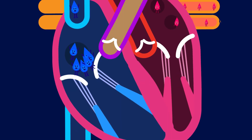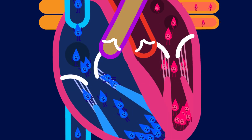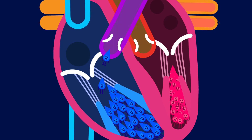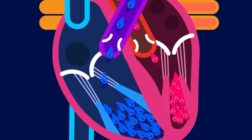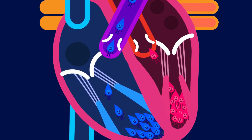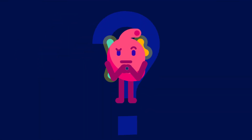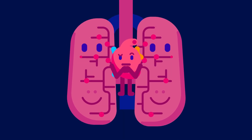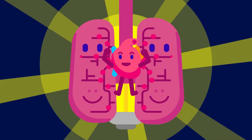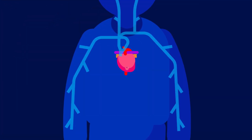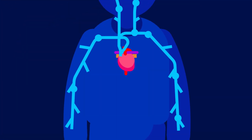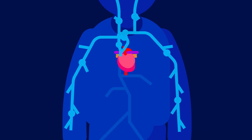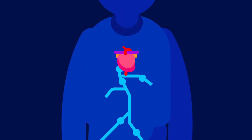The septum prevents mixing of oxygenated and deoxygenated blood. The pulmonary artery carries deoxygenated blood to the lungs, while the aorta carries oxygenated blood to the body. Can you recall from the previous lesson what the pulmonary vein does? Yes — it carries oxygenated blood from the lungs to the heart.